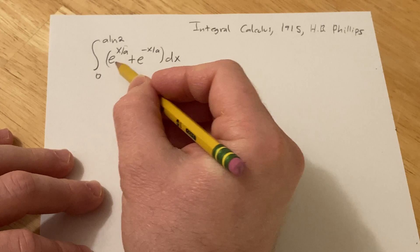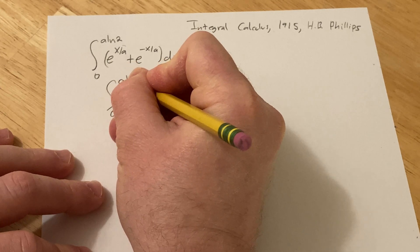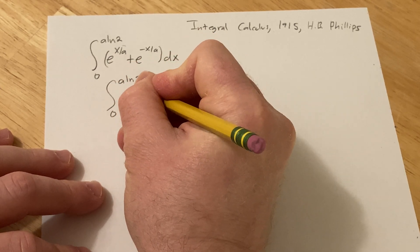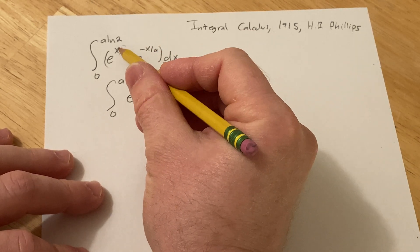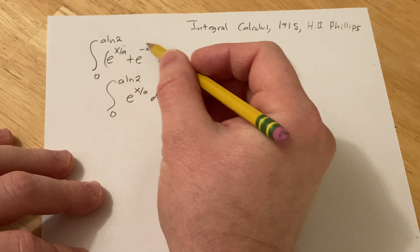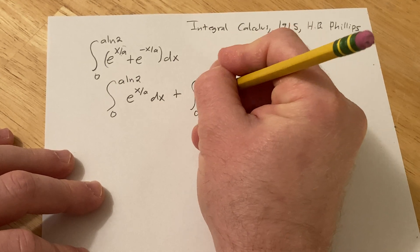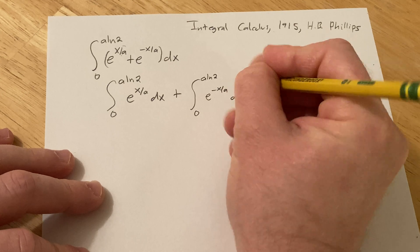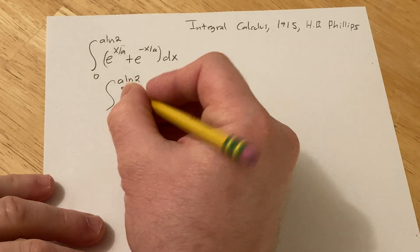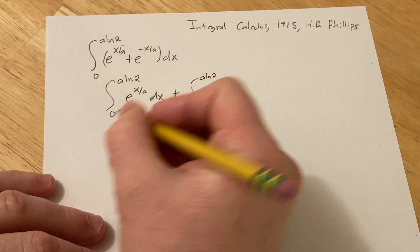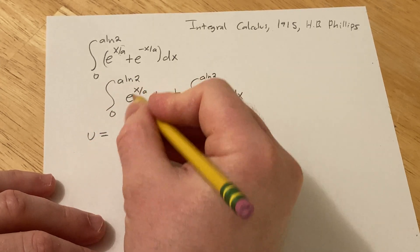We'll start by breaking it up into two integrals and making two substitutions. So we have 0 to a ln2 e to the x over a dx plus... The reason I'm breaking it up is because this is x over a and this is negative x over a, so you're going to need two substitutions. You could probably do it all in your head, but I'll show the work and change the limits of integration, which you should do whenever you make a u-substitution.